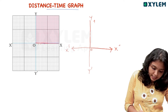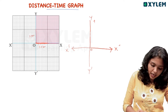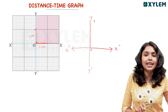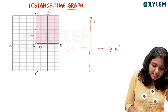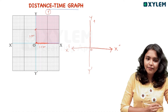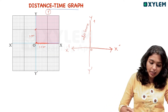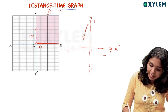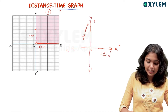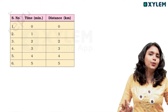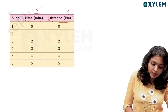Each division is 1 cm. For the distance-time graph, we place distance on the y-axis and time on the x-axis. The x-axis shows time and the y-axis shows distance. We choose a scale: in the x-axis, 1 cm represents 1 minute; in the y-axis, 1 cm represents 1 kilometer. The tabular data shows: time in minutes and distance in kilometers.